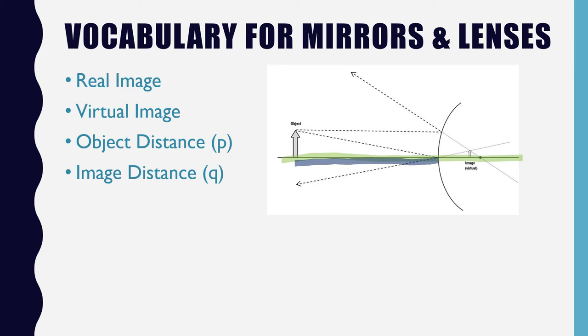The image distance is then the distance from the image to the mirror. And so for this particular picture that I have here, you can see that this image is right here. I'm sorry about that. And I don't have that distance perfect, but you can kind of get the idea that it would be right about there would be that image distance.